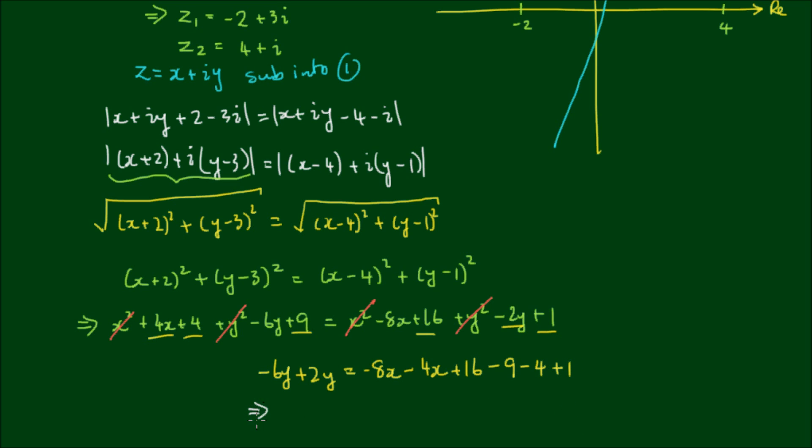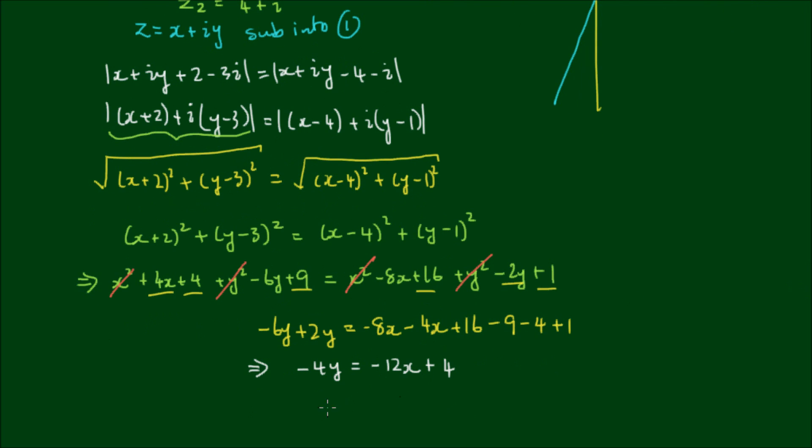So this becomes -4y = -12x + ... Okay, so 16 - 9 is 7 - 4 is 3 + 1 is 4. And then if I divide both sides by -4, I'll get y = 3x - 1. And this equation is the locus.